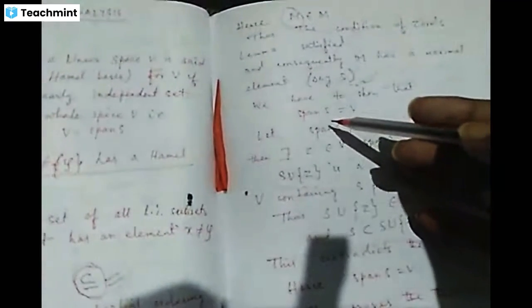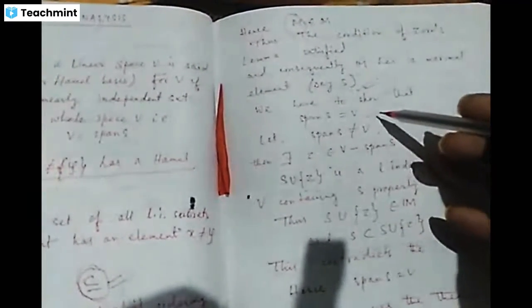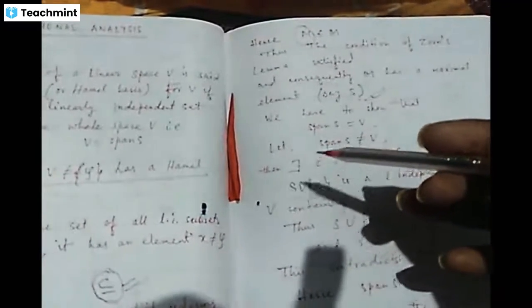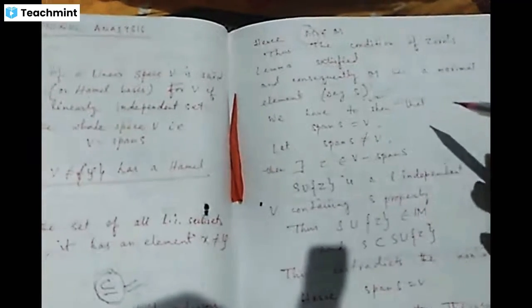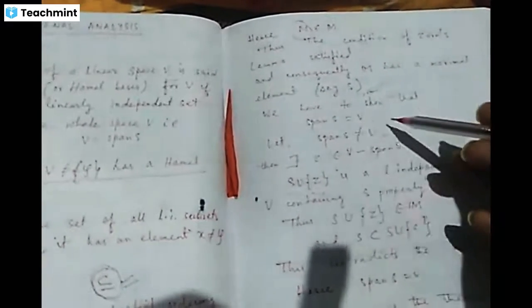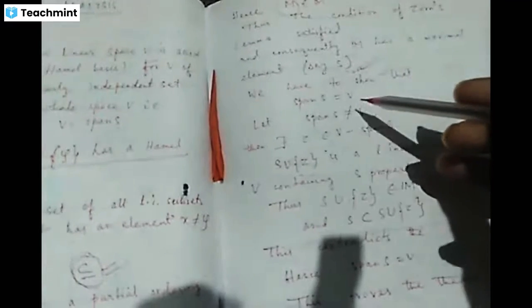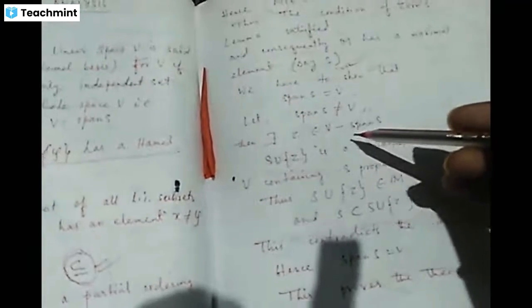Now we just need to prove that S spans V. If we prove this, then we have shown that S is the Hamel basis and every linear space not equal to null must have a Hamel basis. We already have S as a linearly independent set. Now, assume for contradiction that span(S) is not equal to V — that S is not spanning V.